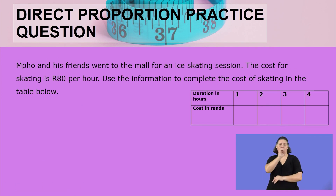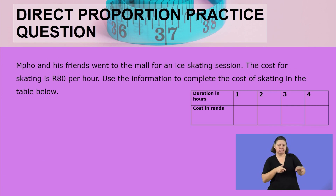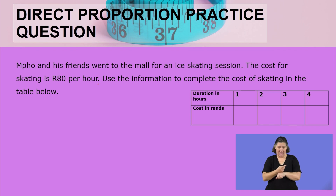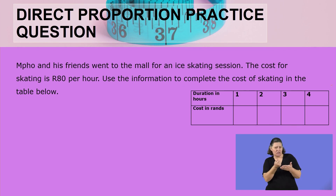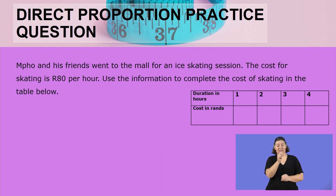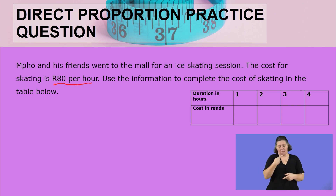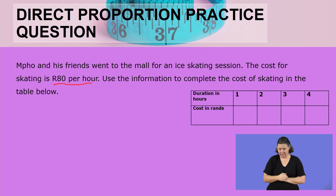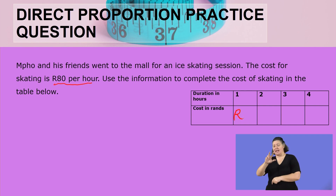Mpo and his friends went to the mall for an ice skating session. The cost for skating is 80 rand per hour. Use the information to complete the cost of skating in the table below. Because the cost is 80 rand per hour, it means for one hour you pay 80 rand. So for one hour, it is 80 rand.